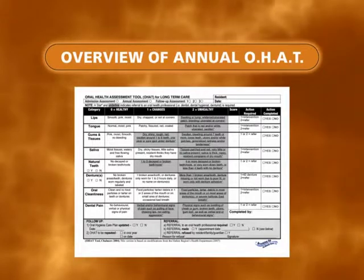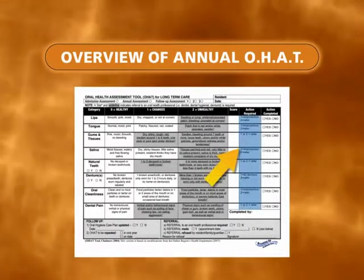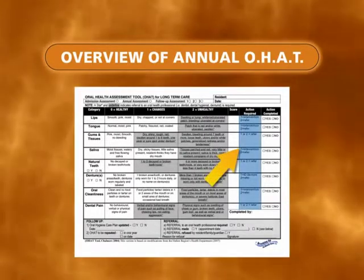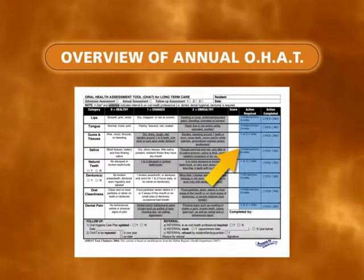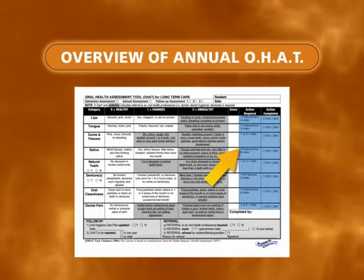For example, the Halton Region Health Department added the Action Required and Action Completed columns to make it easier to interpret the results of the assessment.